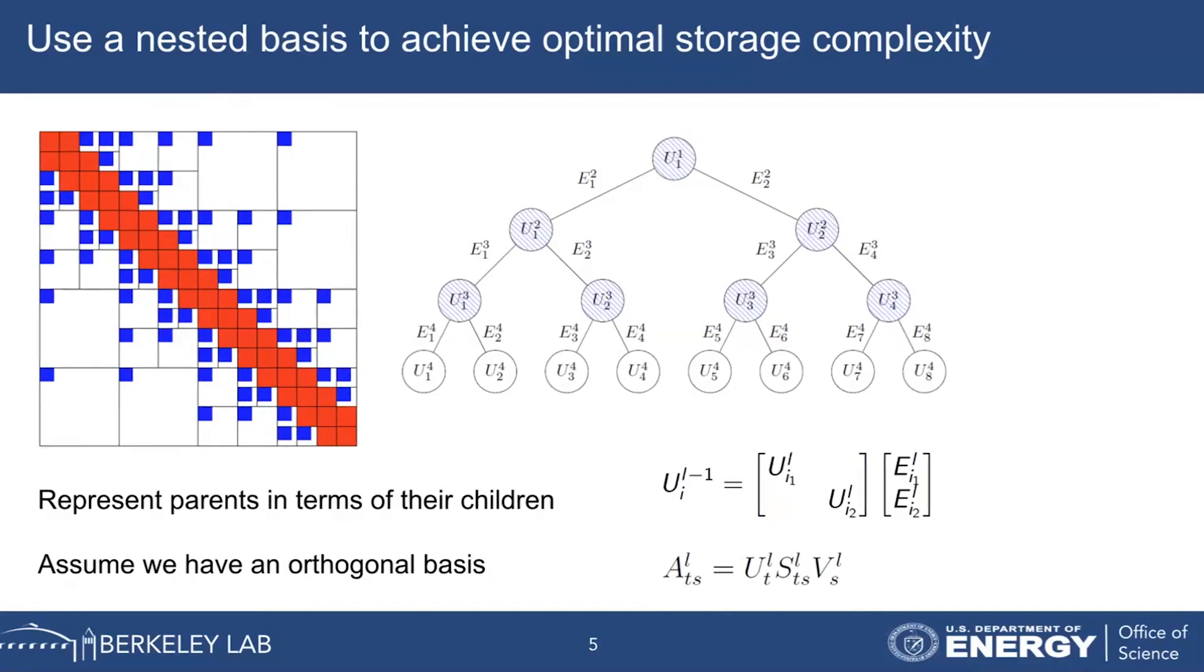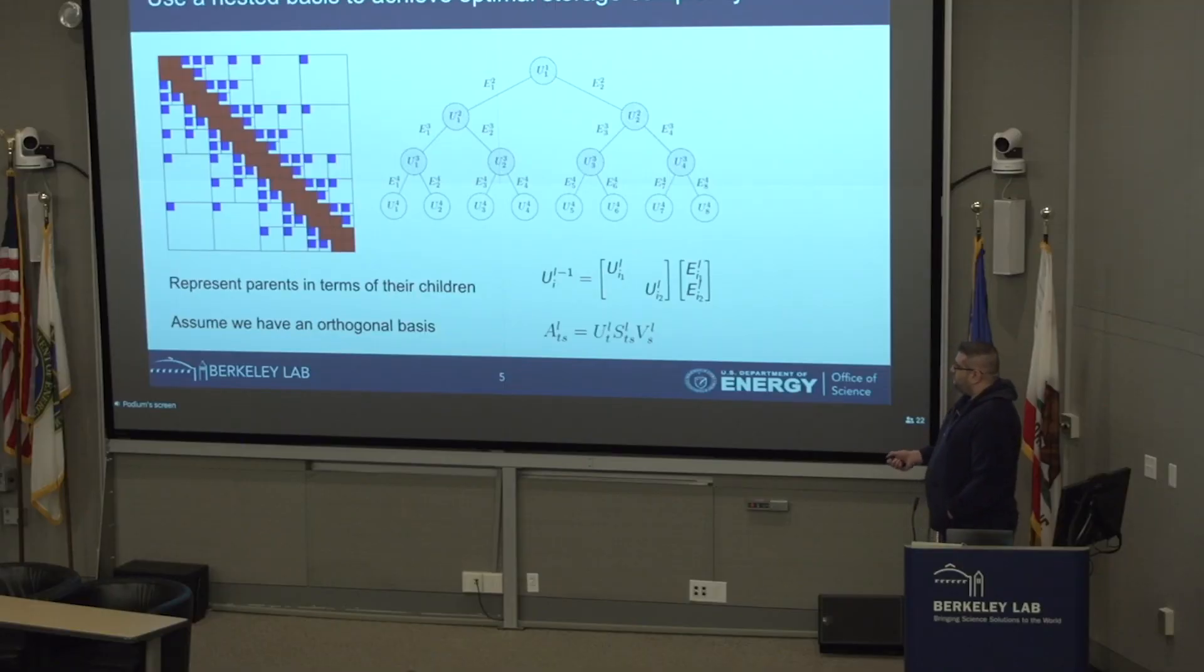The parents can be represented in terms of their children using these small little K by K transform matrices, where K is the rank. Doing that for the entire tree, and then changing the representation of the blocks from UV transpose to U tilde S V transpose, where the U's are these implicitly represented bases and the S are the coupling matrices, these small K by K blocks. Then we would end up with something that we can store in optimal complexity, order n.